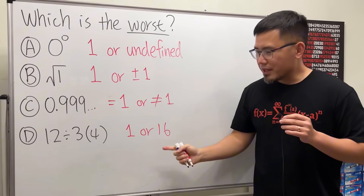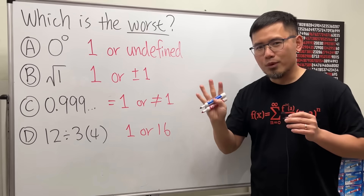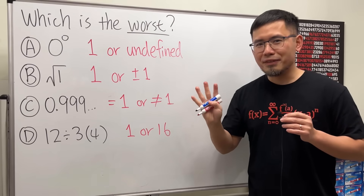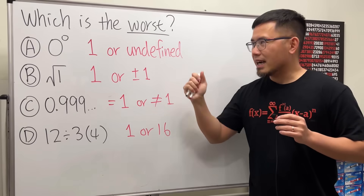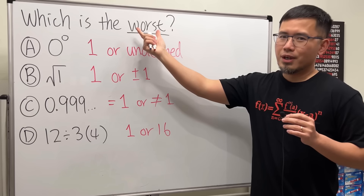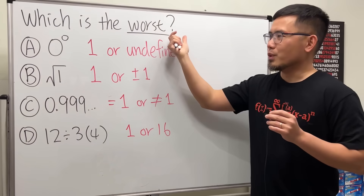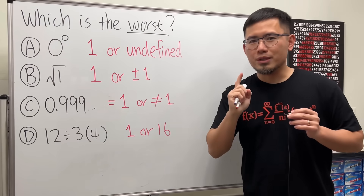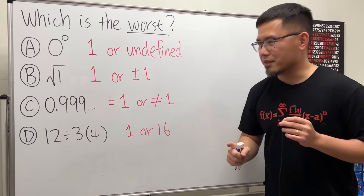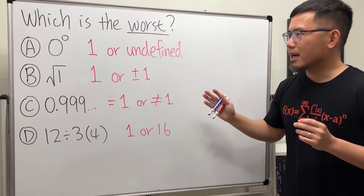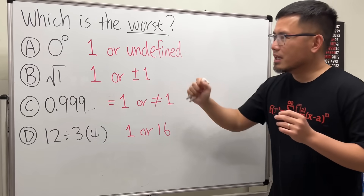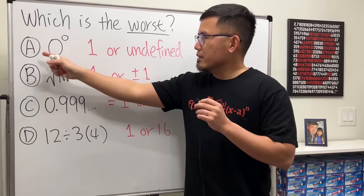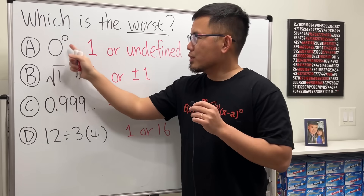I'm pretty sure these right here are the top four most debated math things on the internet. I asked you guys to tell me which one is the worst, and I will show you the result at the end of the video. But let's just go over them first. The first one is zero to a zero's power.